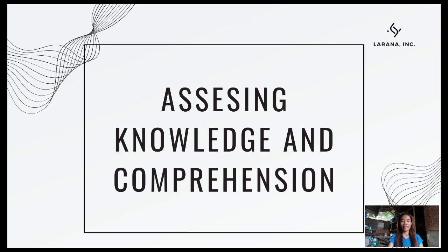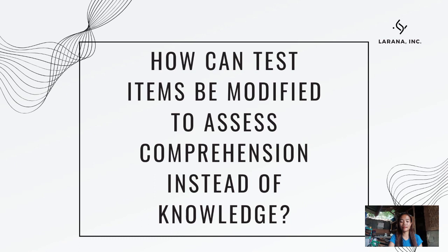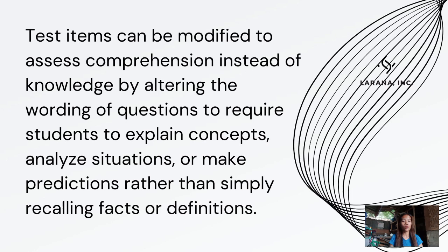Next is assessing knowledge and comprehension. How can test items be modified to assess comprehension instead of knowledge? Declarative knowledge of terminology and facts is effectively assessed with multiple choice items. Test items can be modified to assess comprehension by altering the wording of questions to require students to explain concepts and analyze situations. Knowledge is about the facts you know about a topic, while comprehension is demonstrated when students understand the essential meaning of a concept, principle, or procedure.